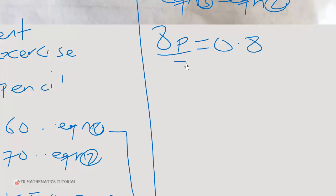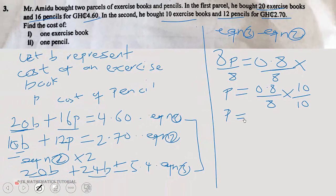So when we divide through by 8, we get P to be equal to 0.8 over 8. It is the same as 8 over 80, because we multiply both the top and bottom by 10. So P will be equal to 8 over 80, which is the same as 1 over 10. So that is 10 pesewas, or in cedis, 0.1 cedis.